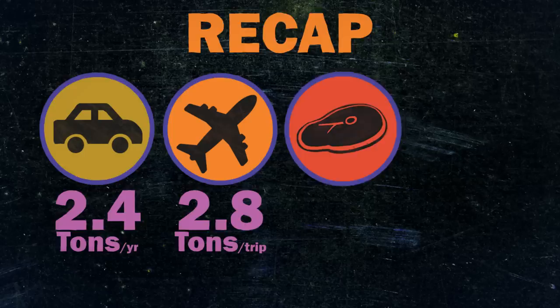Quick recap. Get rid of your car? Save 2.4 tons. Fly less? Save up to 2.8 tons per trip. Stop eating meat? Probably reduce your emissions by around a ton. But here's a really tough one.